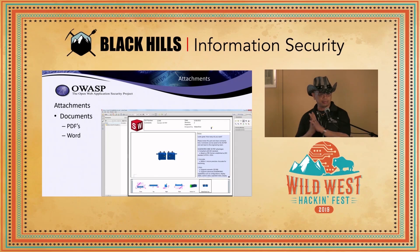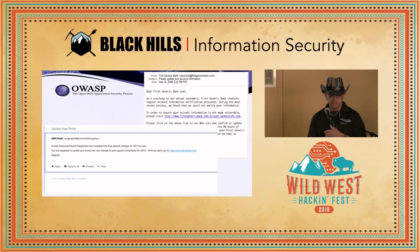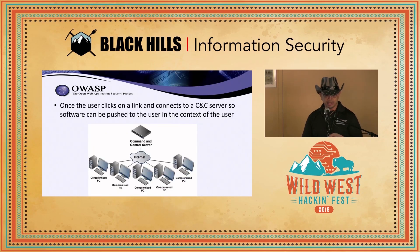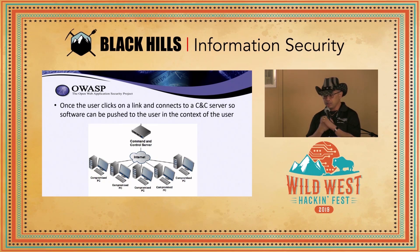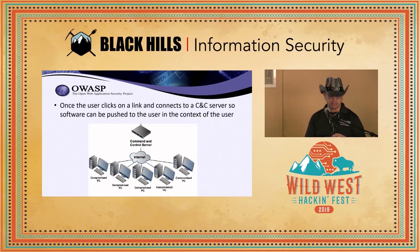How is it actually set up? Documents — remember that they're not just always links. There's PDFs and there's Word as well. There are a couple of examples here of phishing emails. One of the things, as we go through this: we all know that when they do use a link, it goes to a CNC server and can be pushed out in the context of the user. One of the presentations I'll be working on for next year would be to see what happens if we use something like BEEF to test our controls — does our Carbon Black work, does our malware detection actually work, does our SOC know that these attacks are happening?